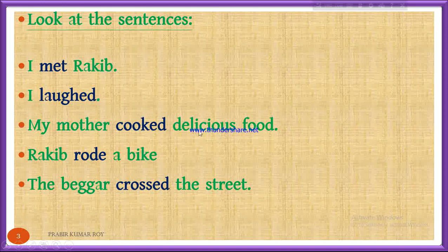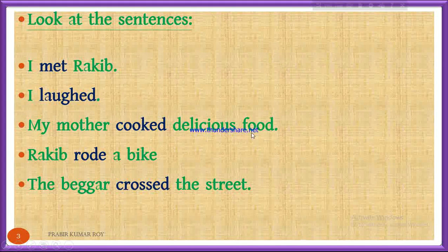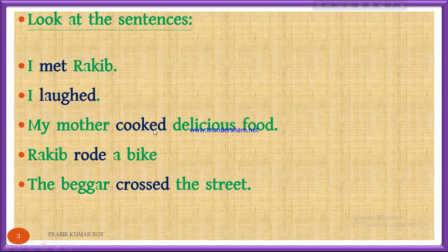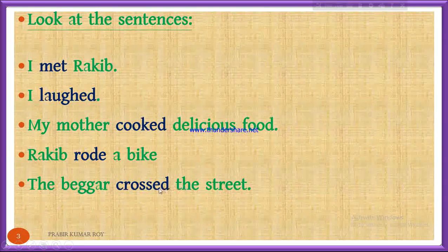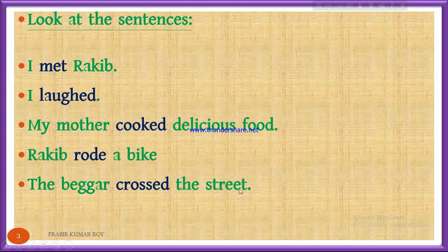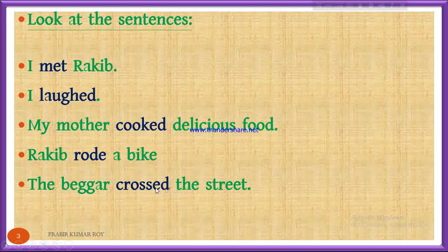In the third sentence, 'My mother cooked delicious food' — my mother is the subject, cooked is the verb, and delicious food is the object, because if you ask 'What did my mother cook?' the answer will be delicious food. So 'cook' is a transitive verb. 'Rakib rode a bike' — What did Rakib ride? A bike. So a bike is the object, making the verb transitive. Finally, 'The beggar crossed the street' — What did the beggar cross? The street. So the street is the object, and since the verb has an object, it is called a transitive verb.